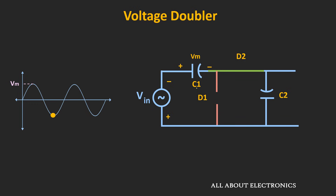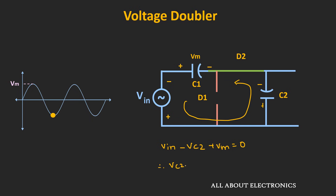Capacitor C1 is already charged up to voltage Vm, so the voltage across this capacitor will get added with the input voltage. Through this path, capacitor C2 will get charged. Applying KVL in this loop: Vin − Vc2 + Vm = 0. Since the peak amplitude of the input signal equals Vm, we get Vc2 = 2Vm. That means during the negative half cycle, capacitor C2 gets charged up to 2Vm.